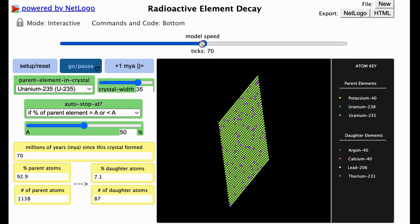You may speed up the model run by sliding this slider to the right and then back to the middle to resume typical model speed. Notice that the model has paused because it automatically reached this condition. 50% of the parent atoms or less remain.